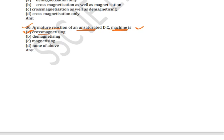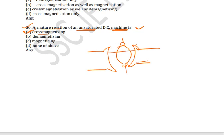Due to armature reaction, the flux in the air gap gets strengthened at one end of the pole and weakened at the other end. So strengthening happens on one side and weakening happens on the other side. This process is called the cross magnetizing effect.